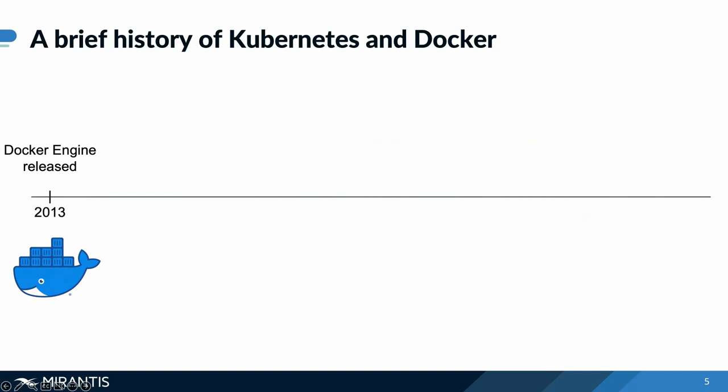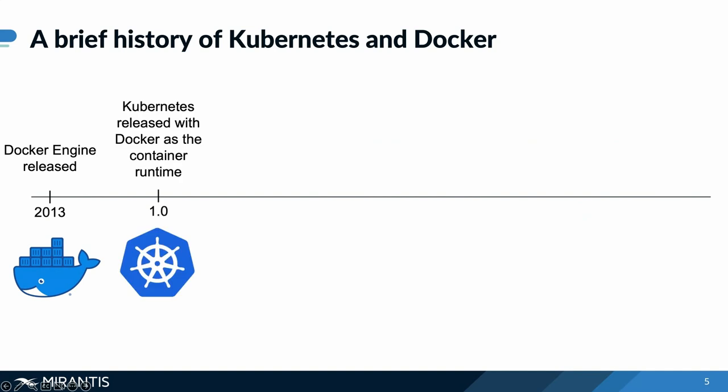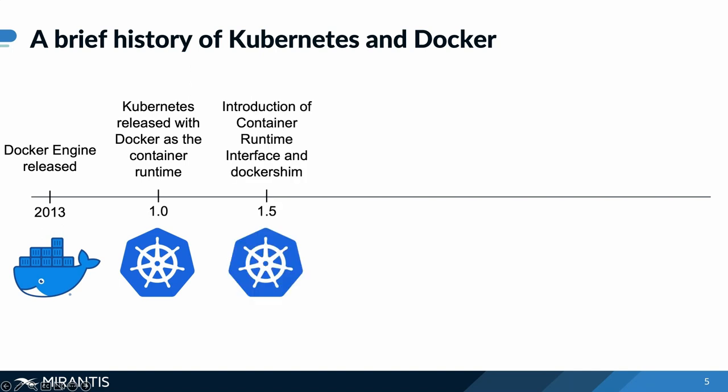There's a lot of tooling built around containerization for folks to work with. In 2015, version 1 of Kubernetes was released and that utilized Docker as the main container runtime. In version 1.5, the container runtime interface was introduced to provide the capability to interact with a wider range of container runtimes. Prior to that, Docker was pretty heavily ingrained within the Kubernetes environment, so Docker shim was created as an adapter between the CRI and the Docker engine.